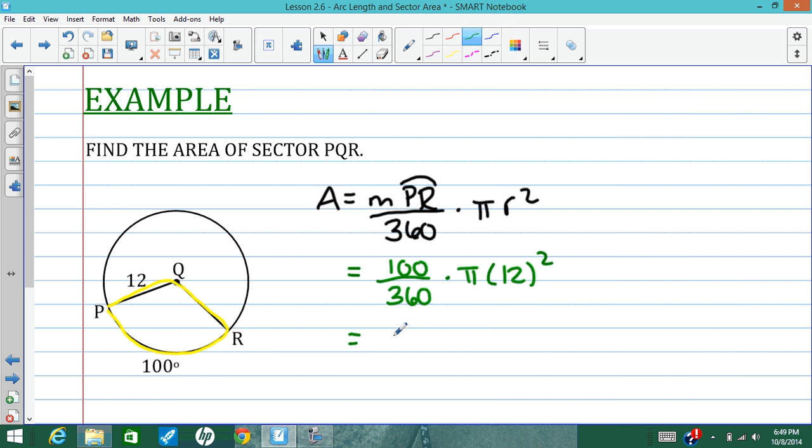And we can just keep simplifying. 100 divided by 360 is a long decimal. It's approximately 0.27 repeating times pi times 144. And we're going to leave in terms of pi here. And we end up with 40 pi. So the area of this sector is 40 pi.